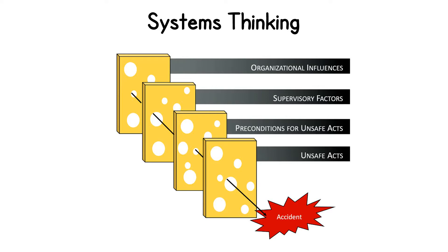We can use James Reason's Swiss cheese model of accident causation to understand how a system functions. The model contends that every system has barriers or layers of defense that protect it from threats. You can think of each barrier as a piece of Swiss cheese. The holes in each of the slices represent weaknesses in individual parts of the system and are continually varying in size and position across the slices. Accidents and incidents occur when a hole in each slice momentarily aligns, permitting several failures.